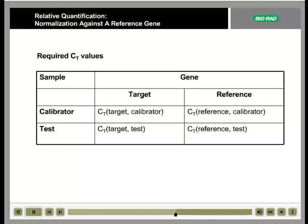As with the unit mass method, at least one calibrator sample is required in addition to the test samples. The method also requires at least one reference gene and at least one target gene. The target gene is also referred to as the gene of interest.